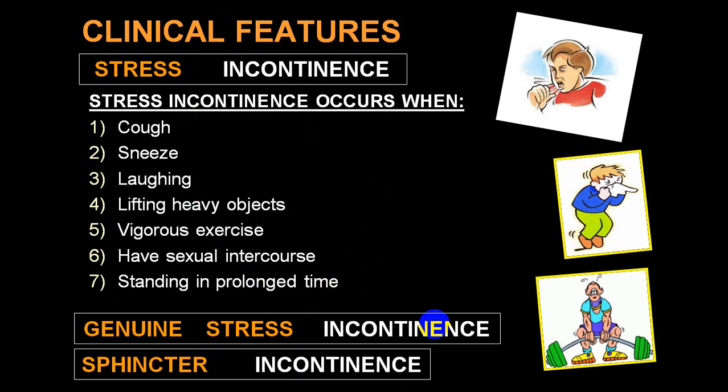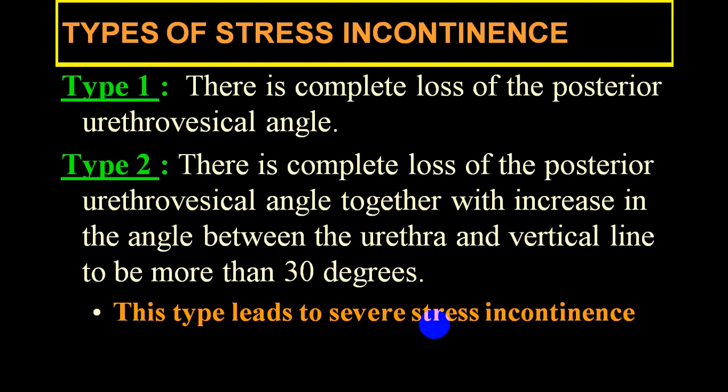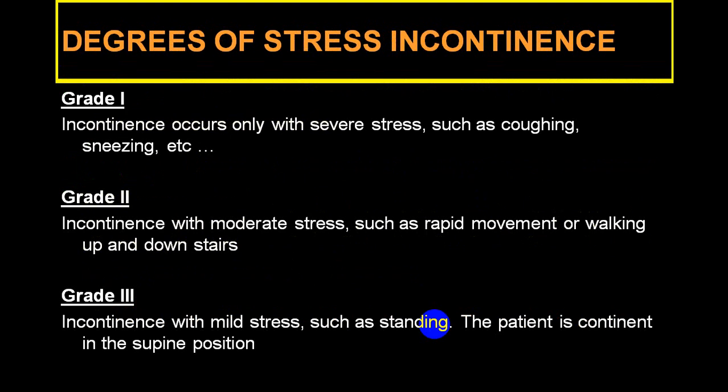There are two varieties: Type 1 is a complete loss of the posterior urethro-vesical angle, and Type 2 is a complete loss of the posterior vesico-urethral angle together with an increased angle between the urethra and vertical line of more than 30 degrees, leading to severe stress incontinence. Degree-wise: Grade 1 incontinence occurs only with severe stress such as coughing or sneezing; Grade 2 with moderate stress like rapid movement or walking up and down stairs; Grade 3 occurs with minimal stress such as even standing, without coughing or sneezing, and the patient is continent in a supine posture.